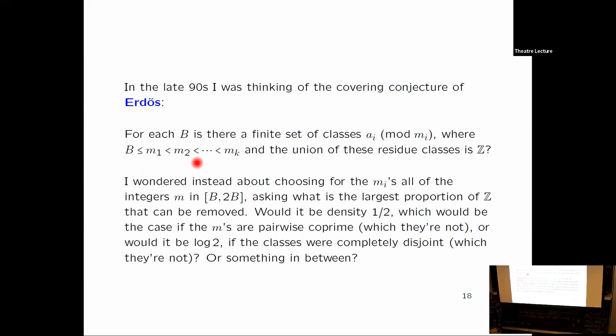You have distinct moduli m1, m2, mk. They're all bigger than some bound B. And for each modulus you have a residue class. And you would like the union of these residue classes to be all of the integers. So if you don't put in the restriction that the moduli are distinct, it's easy. For example, I could take 0 mod 2 and 1 mod 2. The union of those two classes is all the integers. If I don't put in the lower bound restriction, the problem is also trivial, because I could just take 0 mod 1, and that's all of the integers.